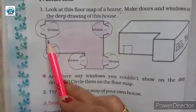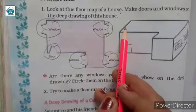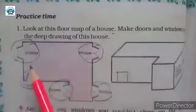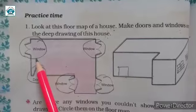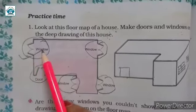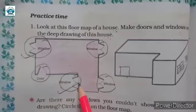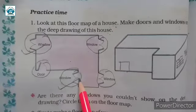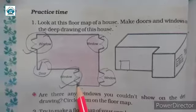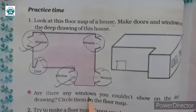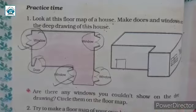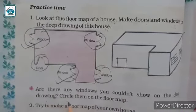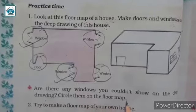Now here is a window. But this window I cannot draw here. Because the left side is hidden. So two windows I could not make. First one is this and second one is this. So these two windows I cannot draw here. I cannot show here. Are there any windows you could not show on the deep drawing? Yes. Two windows.